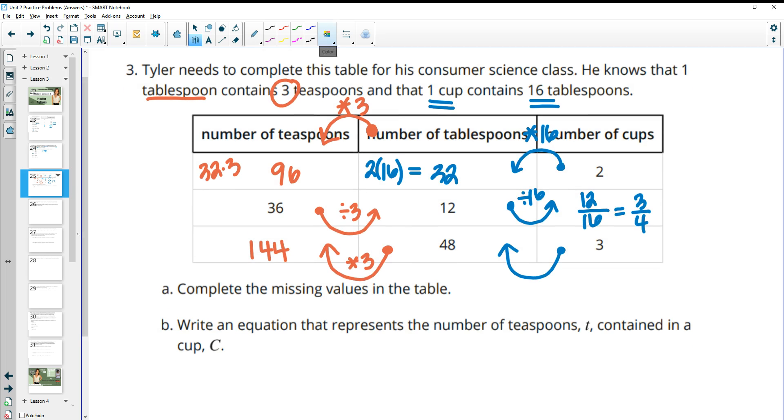Now it wants us to write an equation that represents the teaspoons contained in C cups. So if we had C cups in this column, how many teaspoons would we have? So to go from cups to tablespoons, we would multiply by 16. So this is going to be 16 times C. And then to go from tablespoons to teaspoons, we would multiply by three. So now we're going to take this 16C and multiply by three, 16 times three gives us 48, and then C. So the number of teaspoons contained in one cup equals 48 times the number of cups that we started with.